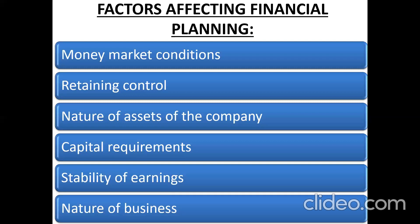Number five and number six — the stability of earnings and the nature of business — go together. If the company has stable and regular earnings, the nature of business is such that they have a fixed and regular income, then they can go for raising funds through the issue of debentures or preference shares, because they are to be paid fixed interest or fixed dividend and the company can afford the same. But in case the earnings are quite irregular and unstable, the nature of business is quite risky, it should go for equity shares, because it is not compulsory to pay dividends to them regularly.